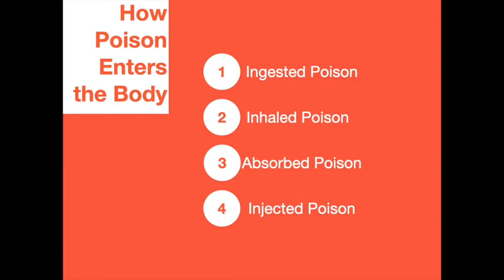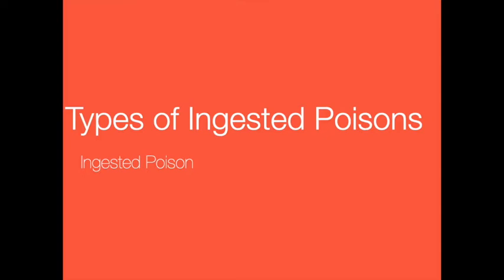Poisons are generally placed in four categories based on how they enter the body: ingestion, inhalation, absorption, and injection. Ingested poisons are poisons that are swallowed and include items such as food, drugs, medications, and household items. Young children are at higher risk of ingesting poisons; seniors may make medication errors due to forgetfulness or difficulty reading labels. In 2007, the CDC estimated that 76 million people contract foodborne illnesses each year in the United States; approximately 325,000 are hospitalized and more than 5,000 die. Two common categories are bacterial and chemical food poisoning.